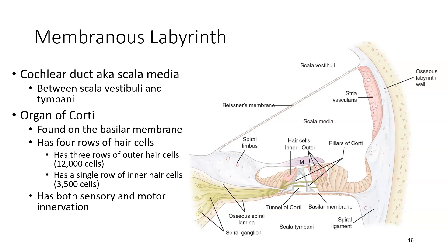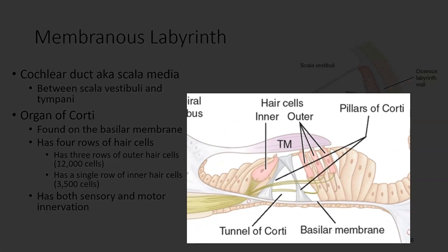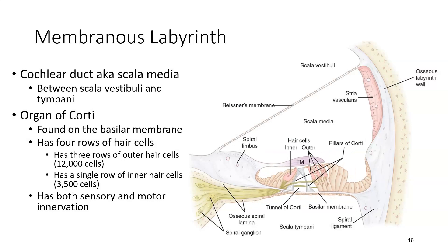The cochlear duct, or scala media, situated between the scala vestibule and the scala tympani, contains an important hearing organ known as the organ of Corti. The organ of Corti rests on the basilar membrane, and this is where our hair cells for hearing are located. There are three different rows of outer hair cells, giving us about 12,000 hair cells total, and a single row of inner hair cells of about 3,500 cells in total.